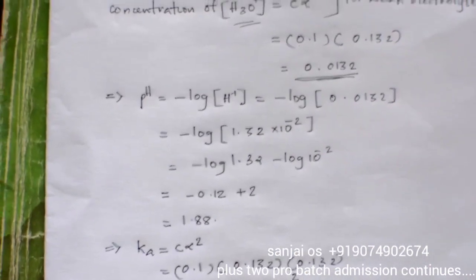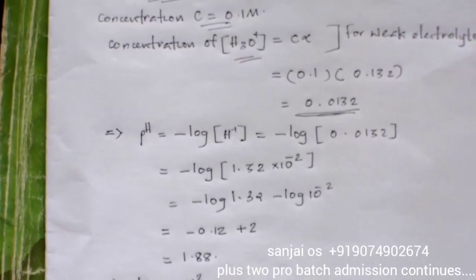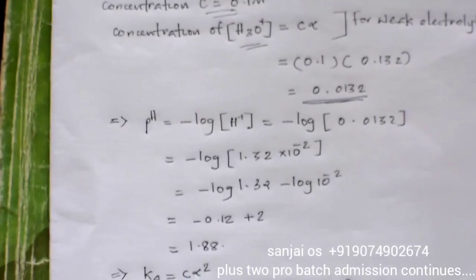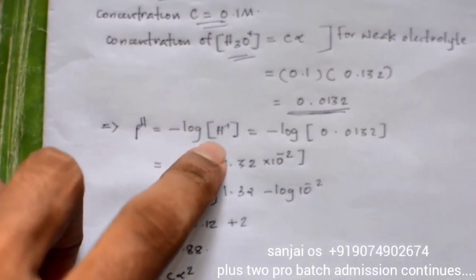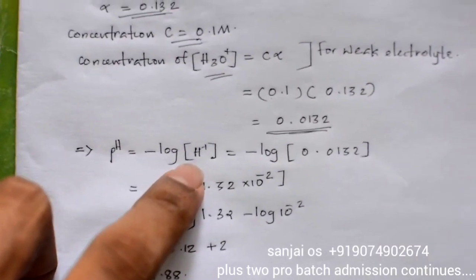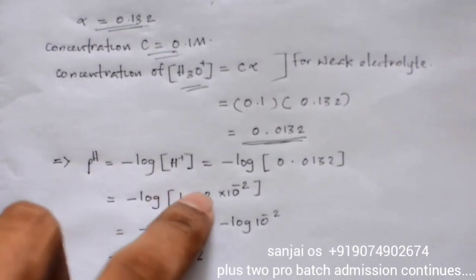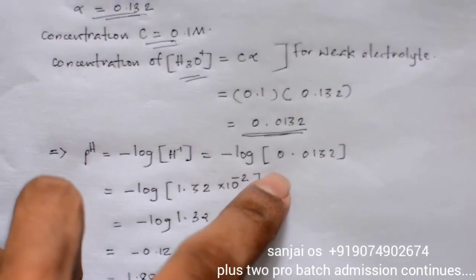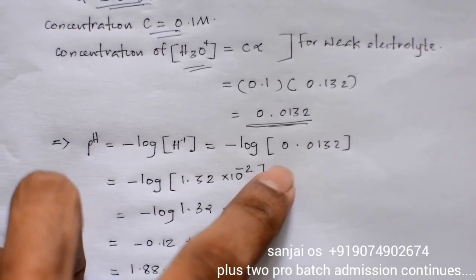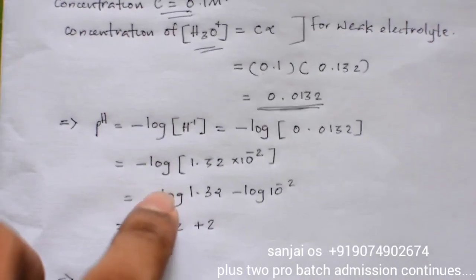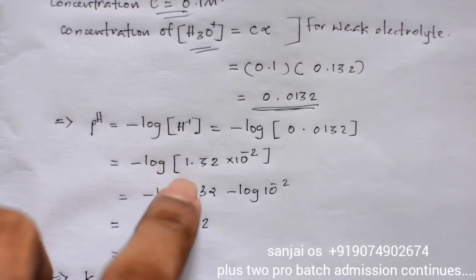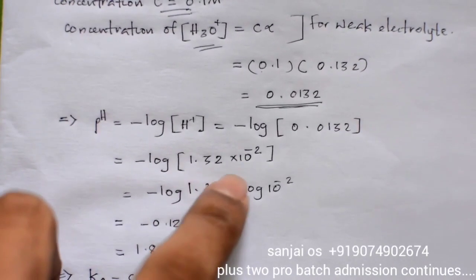We calculate pH. pH is minus log concentration of H plus. We have H₃O plus concentration. We apply: pH equals minus log of 0.0132, which is minus log of 1.32 into 10 raised to minus 2.